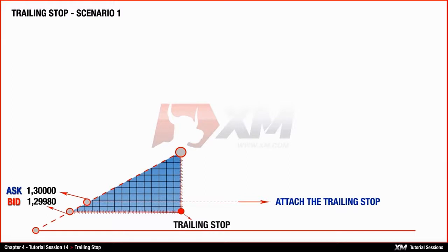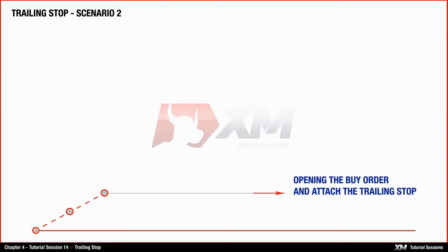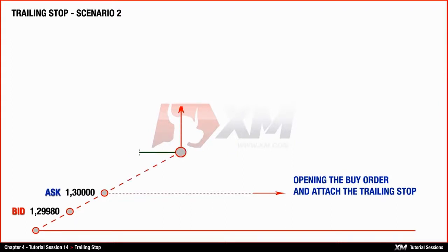Now we will see what happens if you do it otherwise. Supposing you open a buy position of EURUSD and immediately modify this order by using the trailing stop at the minimum distance of 40 points, which is equal to 4 pips. The ask price now will be 1.3000, and the bid price now will be 1.29980. In this case, your trailing stop is at the value of 1.30020.